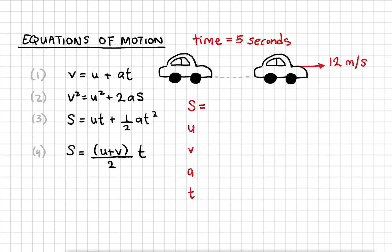We don't know the displacement, so I'll leave it blank. The car was initially at rest, so the initial velocity is 0. The final velocity is 12 meters per second. Acceleration is what we want to find, so I'll put a question mark next to it. t is 5 seconds. So now I need to select an equation that will only involve u, v, a, and t.